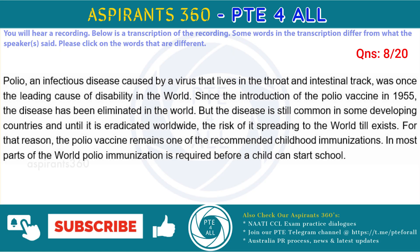Polio, an infectious disease caused by a virus that lives in the throat and intestinal tract, was once the leading cause of disability in the world. Since the introduction of the polio vaccine in 1955, the disease has been eradicated in much of the world. But the disease is still common in some developing countries and until it is eradicated worldwide, the risk of it spreading still exists. For that reason, the polio vaccination remains one of the recommended childhood immunizations. In most parts of the world polio immunization is required before a child can start school.